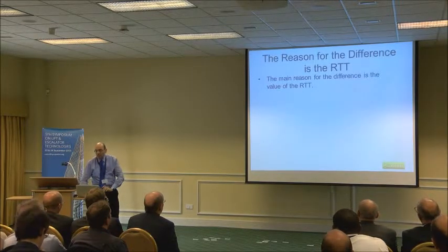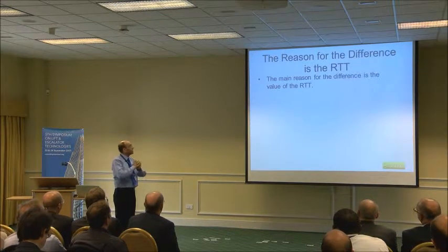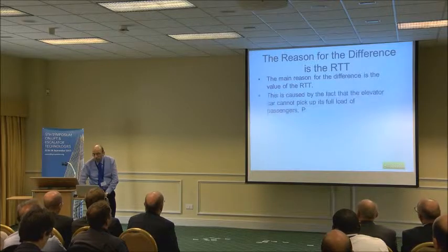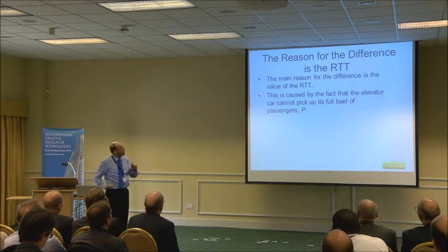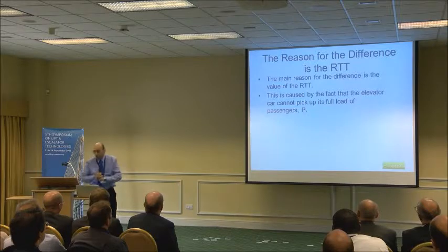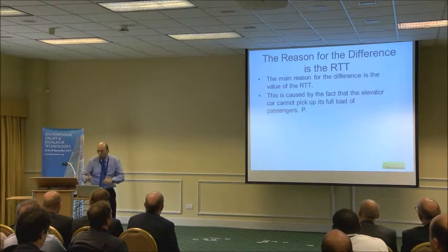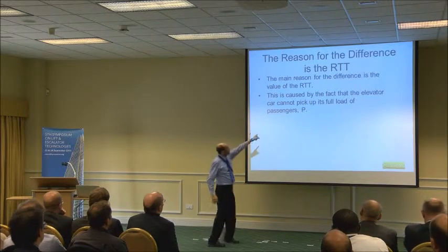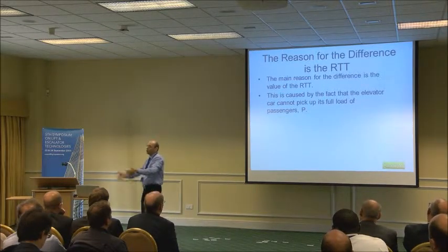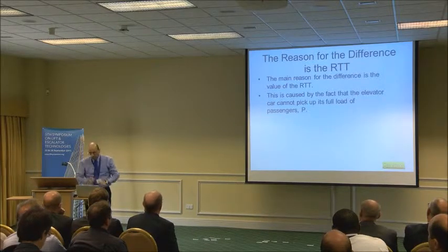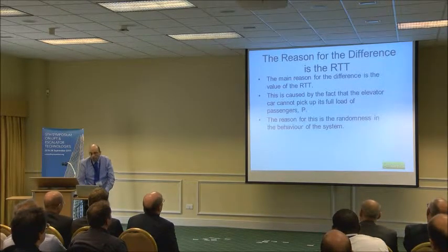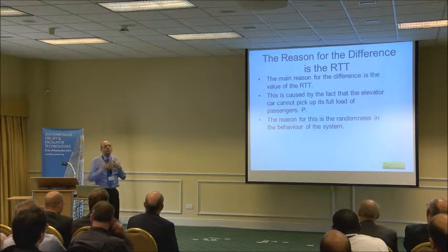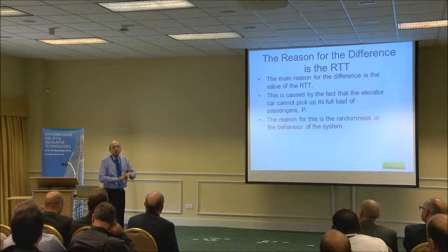I'm suggesting that the main reason for the difference between calculation and simulation in round trip time is loading — car loading. This is caused by having fewer passengers in the car than we were expecting; we can't get the car to load as much as we assume. P is an important value here — P is the value we calculated the round trip time based on. We assume the car will take 10, 11, or 12 passengers in each round trip. The reason for not getting that number is randomness — the system is a random system.